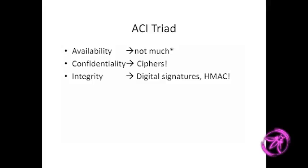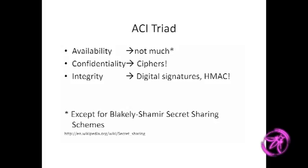Before I get into deep detail, I want to gauge what people are looking for. I prefer ACI versus CIA triad — it's less ambiguous and in alphabetical order. When it comes to cryptography, there's not a whole lot that can be done in availability, though there is a little. For confidentiality we have ciphers, and for integrity there are cryptographic checks — an important part of cryptography that's often misunderstood or unknown.